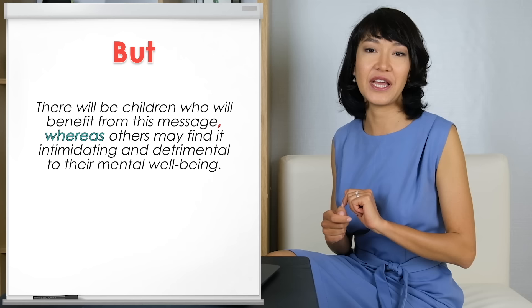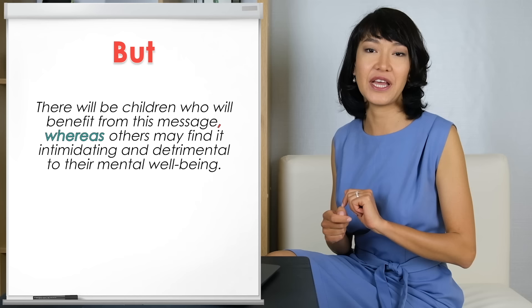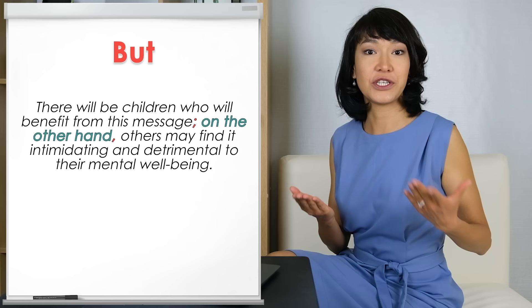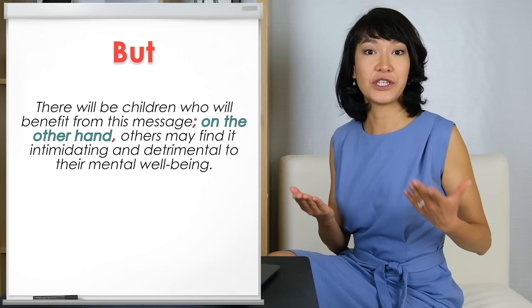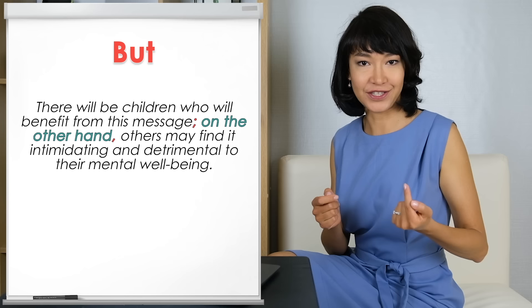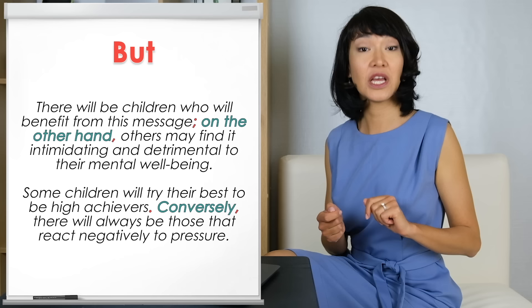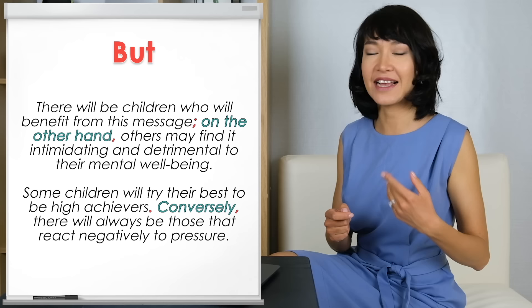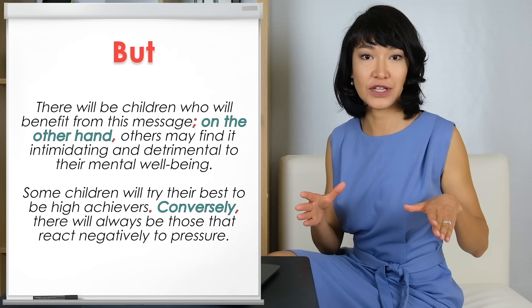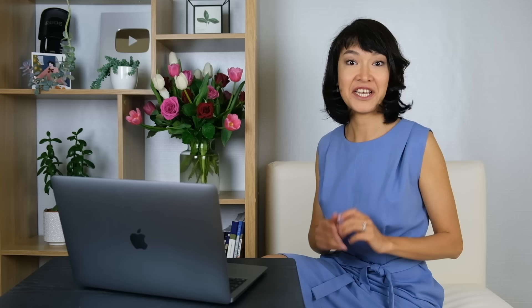With the other examples, we should pay careful attention to punctuation, in the same way we do with HOWEVER and NEVERTHELESS. For example: 'There will be children who will benefit from this message; on the other hand, others may find it intimidating and detrimental.' Or, of course, we can begin a new sentence: 'Some children will try their best to be high achievers. Conversely, there will always be those who react negatively to pressure.' You can use ON THE OTHER HAND and CONVERSELY both ways — with a semicolon and with a full stop.